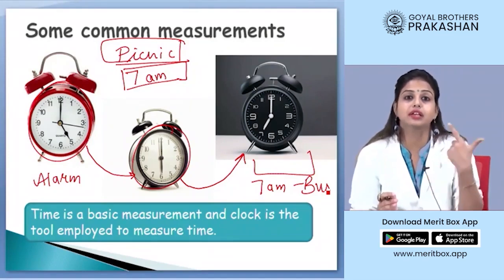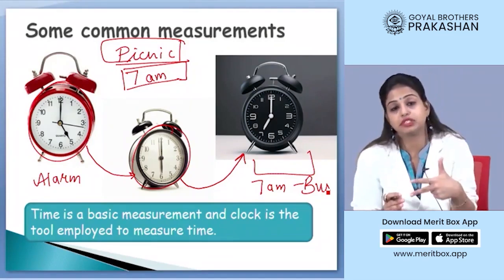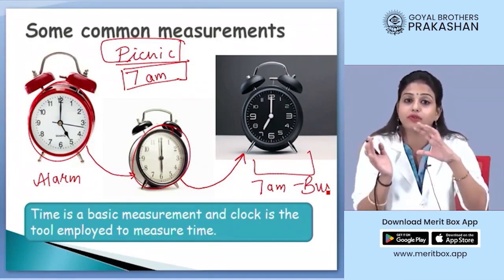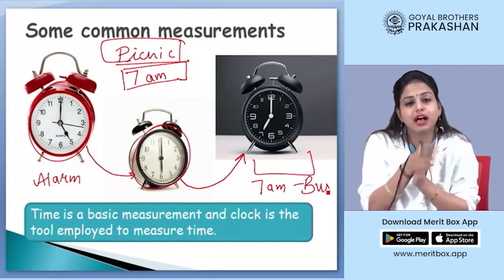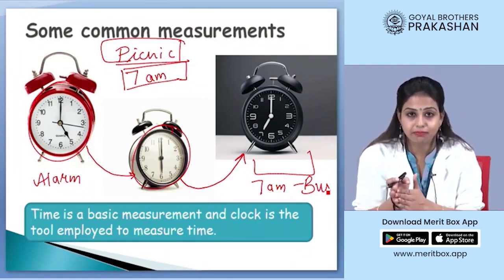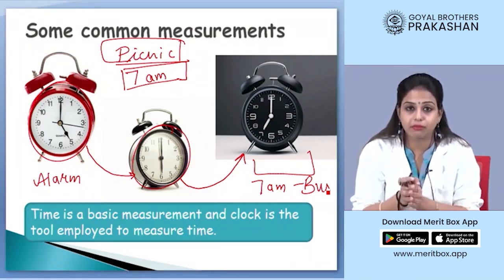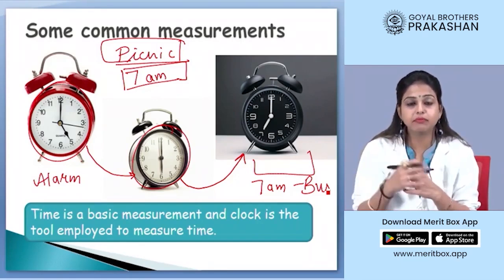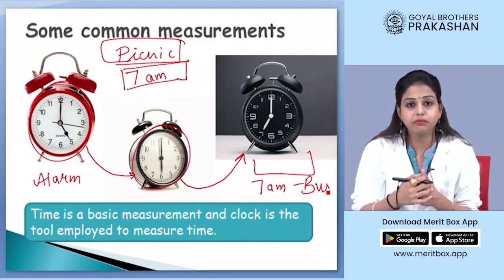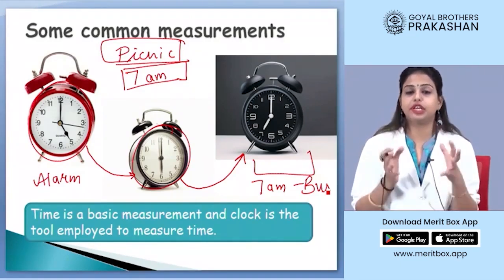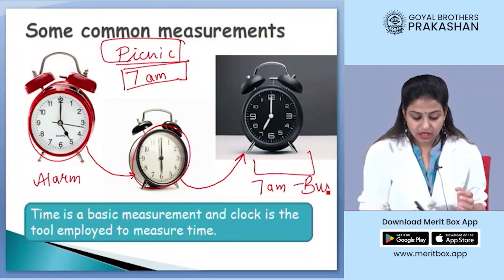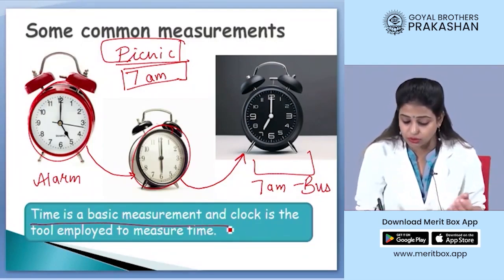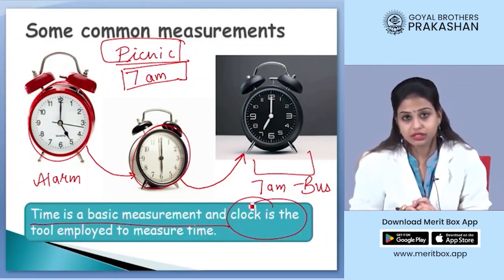We set our entire day around time — class time, going home, coaching, study time, playtime. We measure our activities with time: 3 p.m. study, 4 p.m. play, 7 a.m. wake up, 9 p.m. food. So time is a basic measurement, and what do we use to measure time? We use a clock or a watch. Nowadays we also use mobile phones and digital watches.